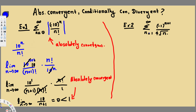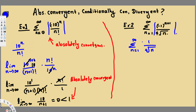Let's do the second question. We have sigma from n=1 to infinity of (−1)^(n+1) over the fourth root of n. You may already notice this is an alternating series, but the question is asking to find absolute convergence first, so we don't do the alternating series test right away. We take the absolute value and check convergence — that gives us sigma from n=1 to infinity of 1 over the fourth root of n.